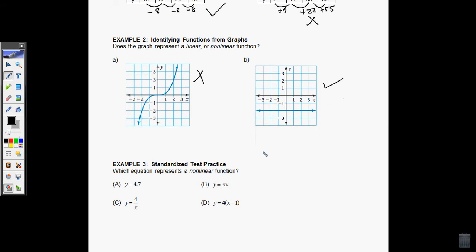Now let's look at three. Which of these equations represents a nonlinear function? So how can I tell if an equation is linear or nonlinear? Let's see if we can write them all basically in what's called slope-intercept form. Is it possible to do that? Because we know that slope-intercept form is the form for linear equations.